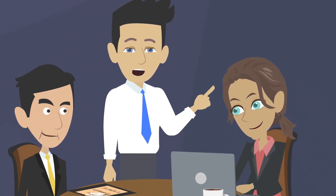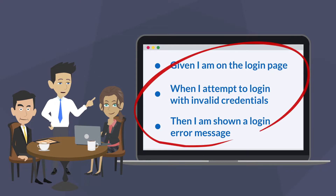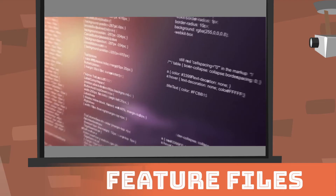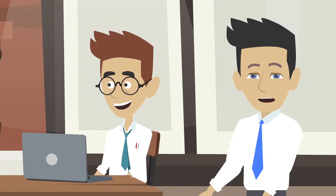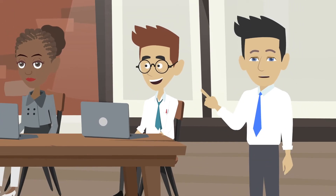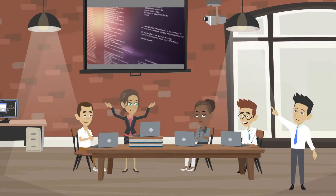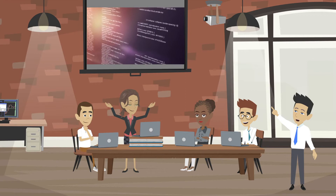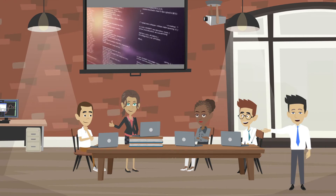Behind the scenes, your BDD framework will match this natural language to the code that developers write to actually do those steps, but it is always driven by the natural language. The feature files then become documentation of the application, but unlike most documentation, they get executed against your program. If this documentation ever gets out of date, then something will break in your testing stage. Any change made to the software gets verified by every example created in this process of documenting requirements as executable specifications.